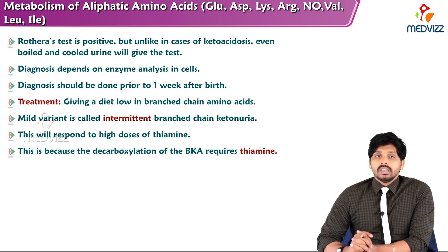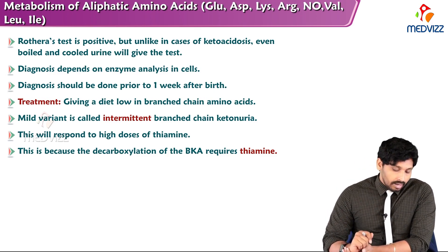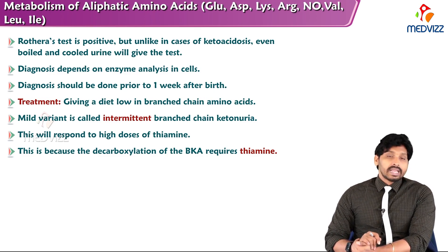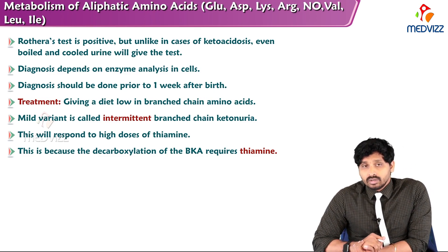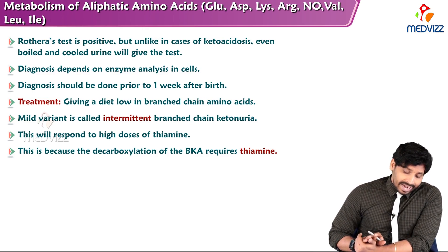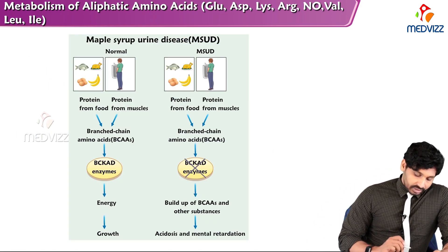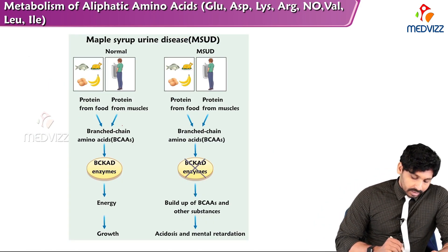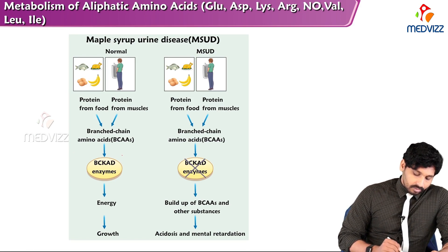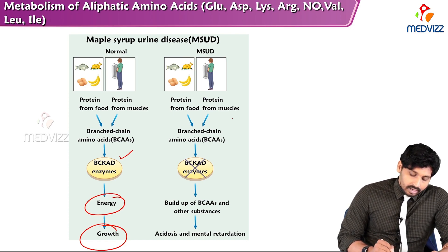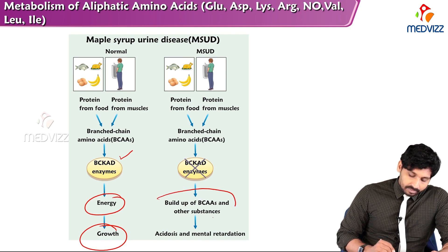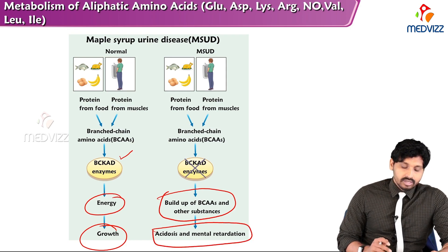Diagnosis depends on enzyme analysis in cells and should be done prior to one week after birth. Treatment involves giving a diet low in branched chain amino acids. A mild variant is called intermittent branched chain ketonuria, which responds to high doses of thiamine, because the decarboxylation of branched chain keto acids requires thiamine. In MSUD, branched chain keto acid dehydrogenase enzymes are deficient, leading to buildup of branched chain amino acids and other substances, causing acidosis and mental retardation.